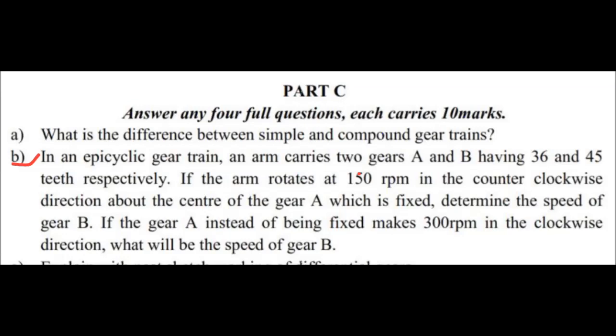The first one is a 2017 December, part C question — question 9A. What is the difference between simple and compound gear trains? That is already discussed in the last class and carries two marks. The part B question is: in an epicyclic gear train, an arm carries two gears A and B having 36 and 45 teeth respectively. If the arm rotates at 150 RPM in the counterclockwise direction about the center of gear A, which is fixed, determine the speed of gear B.